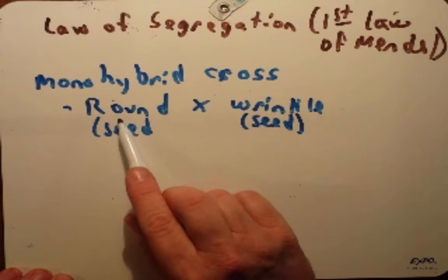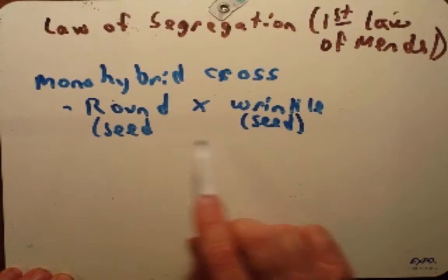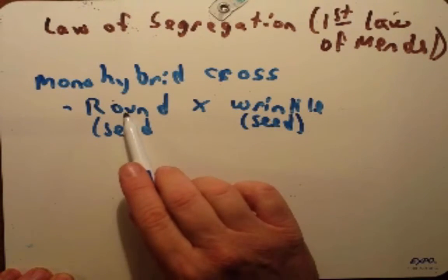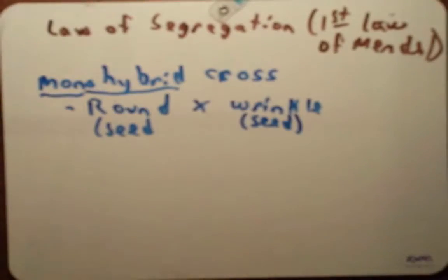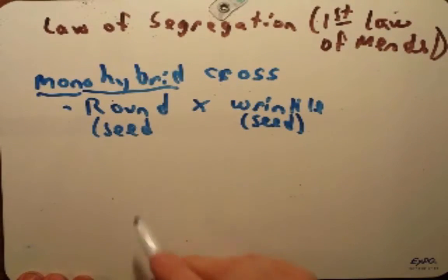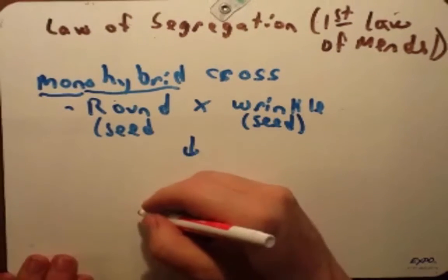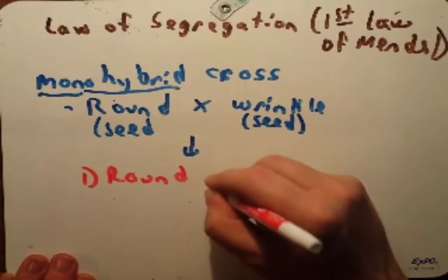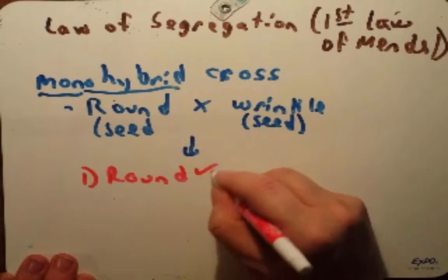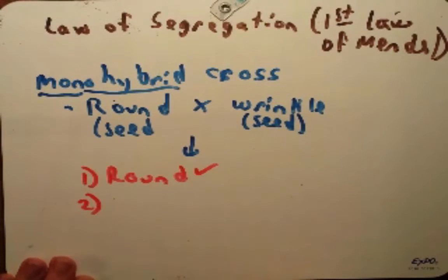This is monohybrid because we're dealing with the same trait of seed shape but different variations. This one's round, this one's wrinkled. So when you did this cross, round by wrinkle, what did he see? Well I imagine before this cross was done, there were a couple predictions. Maybe the progeny would all be round, and a bit of a spoiler alert, this is what they see.